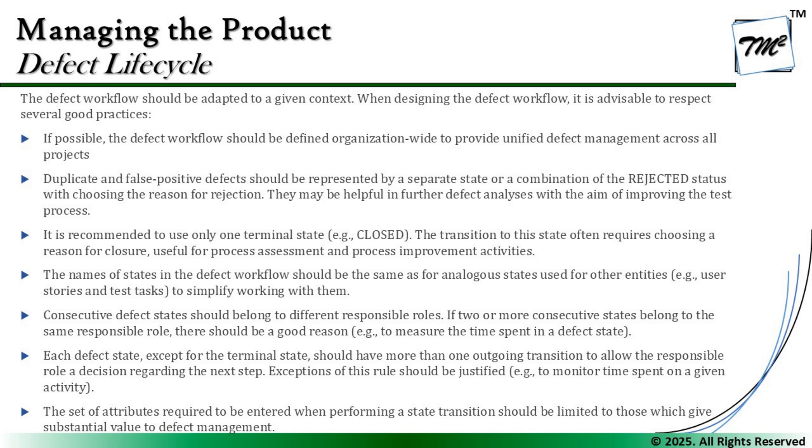We should have two transitions coming out of every single state so that we have multiple options to work upon. Finally, the set of attributes required when performing a state transition should be limited to those which give substantial value to defect management. For example, when changing status from Open to Assigned, we may collect: who approved the defect, which developer is working on it, and the anticipated timeline to fix it. When moving from Assigned to Fixed, we may collect the root cause and correction actions taken. The message is to keep it limited to what you are interested in — don't make it a form that people get tired of filling. Keep it limited to the information you need, and that should do the job.